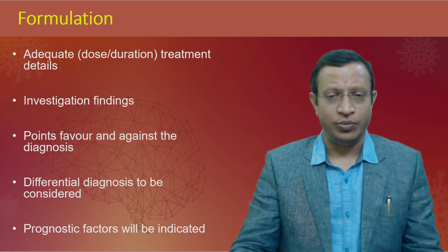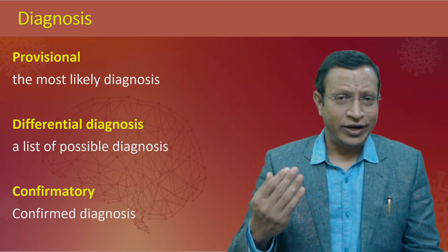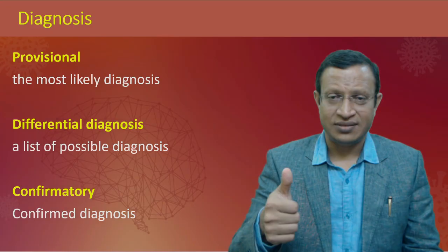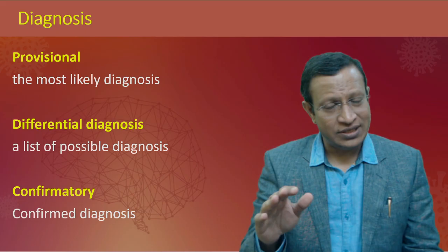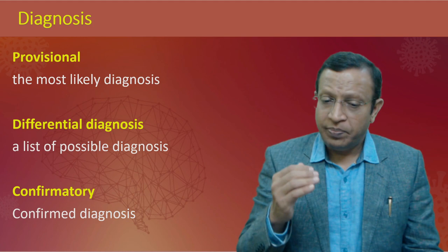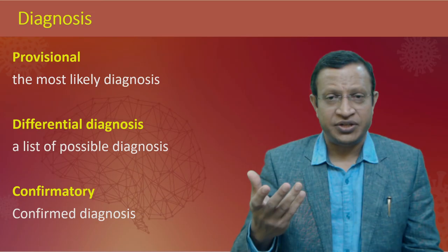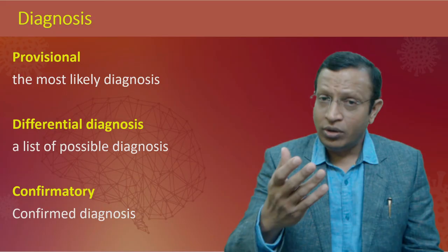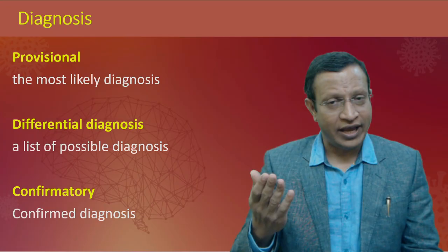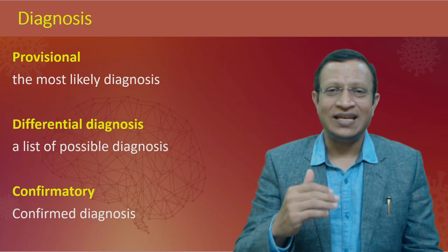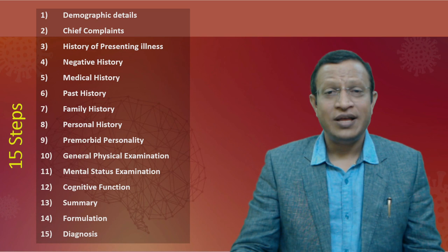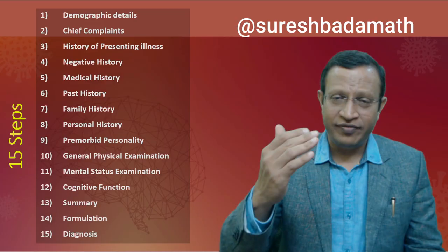The final diagnosis may be a confirmatory diagnosis (based on observation, history, and investigation), a provisional diagnosis (when information is limited or illness not fully formed), or a differential diagnosis (a list of possible diagnoses when unable to pinpoint). This is how the 15 steps of detailed evaluation in psychiatry are done — from demographic details to diagnosis. If you like this video, please subscribe and stay safe.